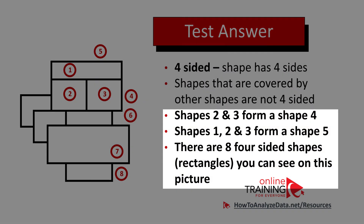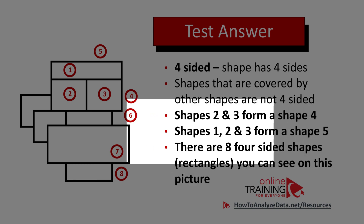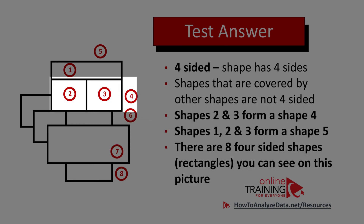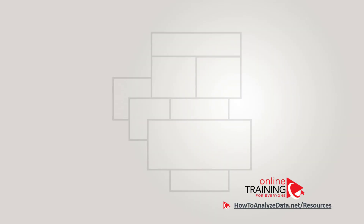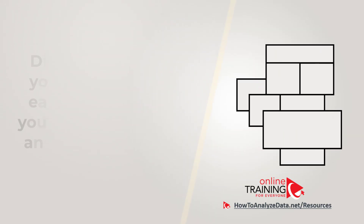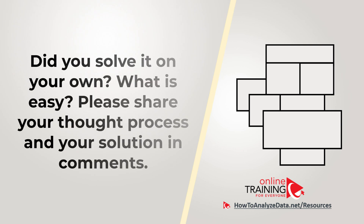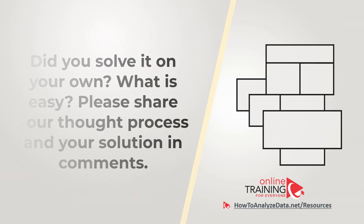Looking at the inside shapes: shapes 2 and 3 form shape 4, and shapes 1, 2, and 3 form shape 5. Was it easy to solve? Do you see any shapes we might have missed? Please share your thoughts in the comment section.